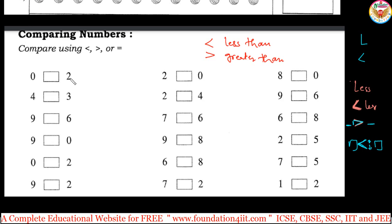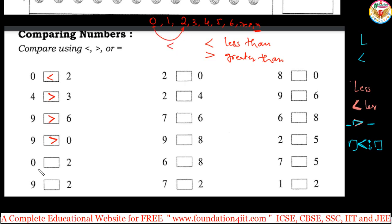In the greater than symbol, this gap is more — so the bigger number is on this side and the small number on the other. Whatever way you remember, this symbol is for less than and the next is for greater than. If the first number is smaller than the second, we use less than. Zero is less than two — in the number list: zero, one, two, three, four, five, six, and so on. Based on this number list we do comparing. While counting numbers towards the right, the left-side number is smaller than the right-side number.